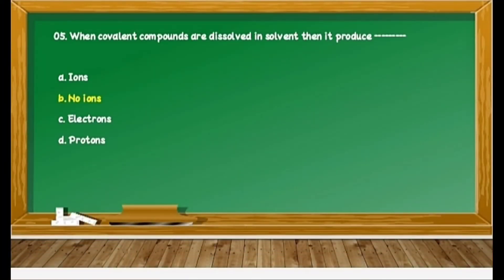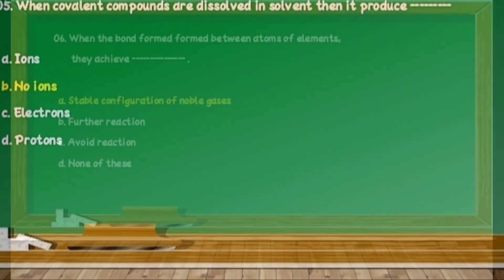Question 25: When covalent compounds are dissolved in a solvent, then it produces dash dash. We know that covalent compounds are insoluble in polar solvent; therefore they cannot produce any kind of ions. Hence, in these four options, the second option is no formation of ions. Therefore, option B is correct.